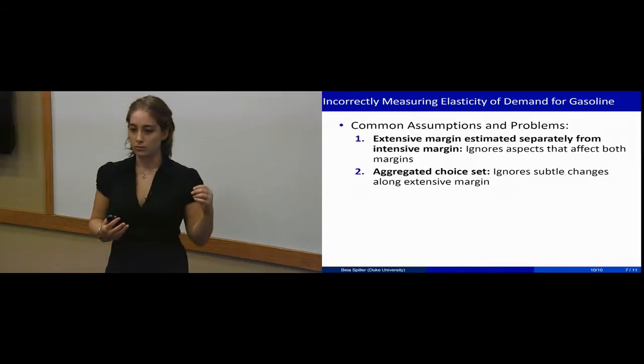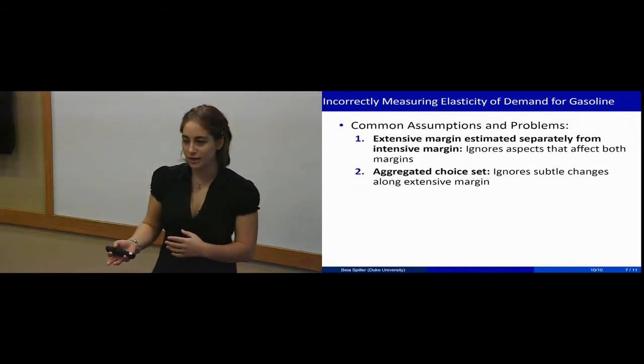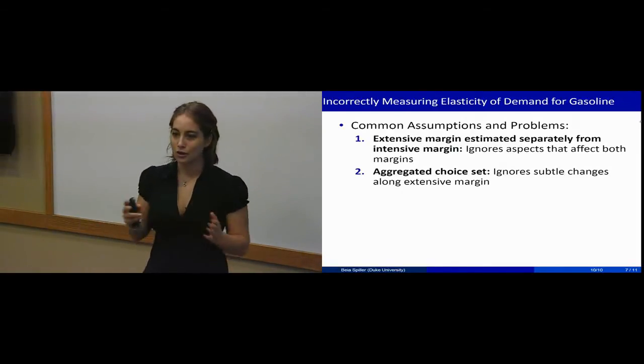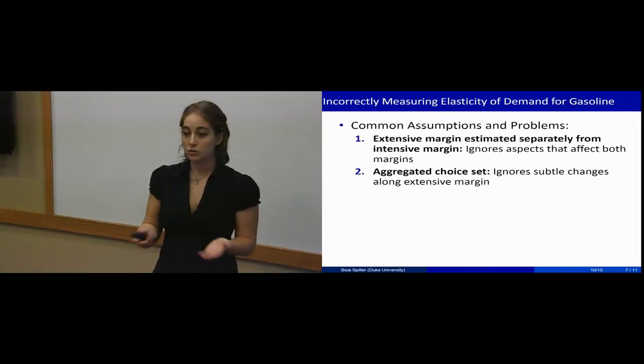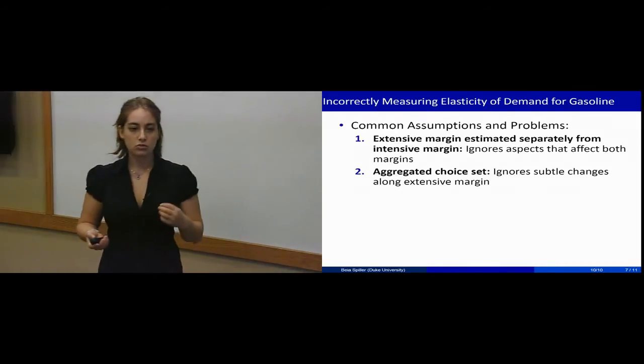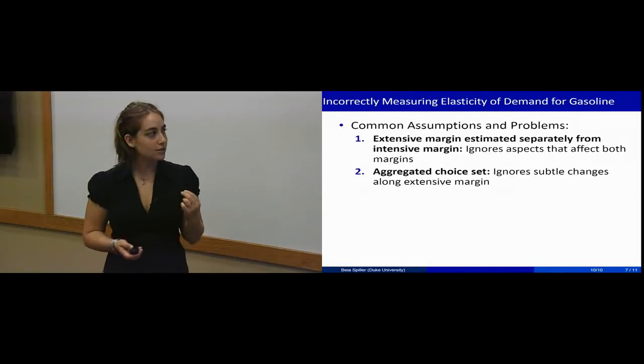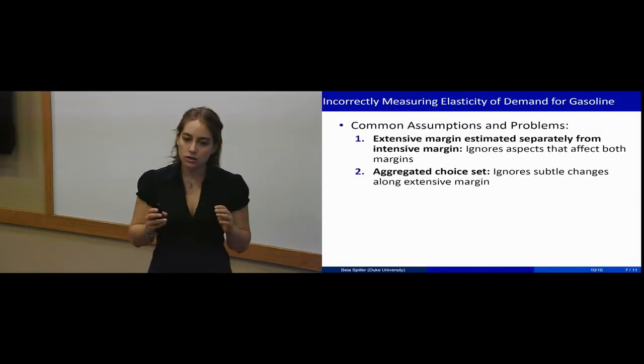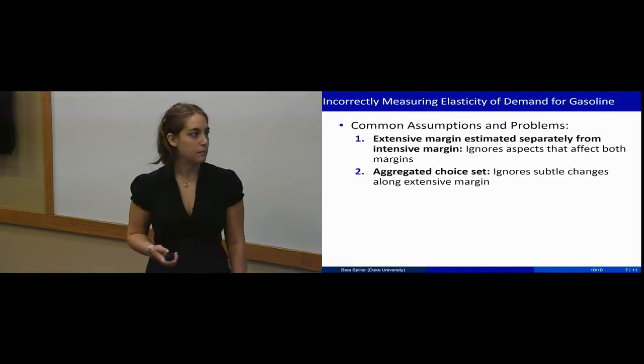If a household goes from a Ford Taurus to a Honda Civic, and those two were contained in one of these categories, the researcher would say there's no change whatsoever. So it's really important to have a much less aggregated choice set in order to capture that movement.